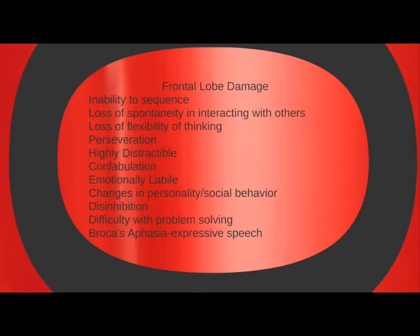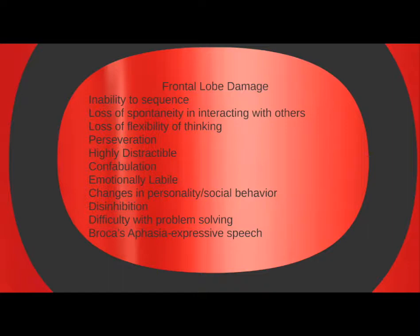Another major injury that occurs in the frontal lobe is perseveration — a person will not be able to talk about a different topic and will always discuss the same topic over and over in repetition. That same person might also be highly distractible and unable to complete that thought. They may have confabulation, where they're imagining activities or hallucinations that happen in their mind but not in reality. They may be emotionally labile, have changes in personality or social behavior. Disinhibition is very common, as is difficulty with problem solving. One of the most important areas that can be affected is Broca's area, causing Broca's aphasia or expressive speech deficits.